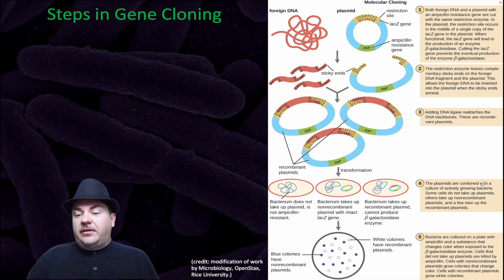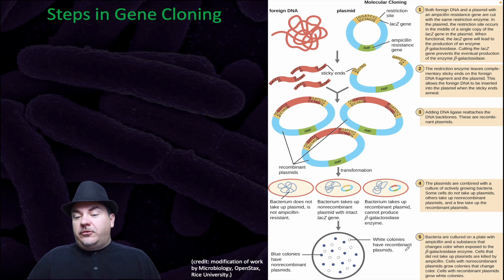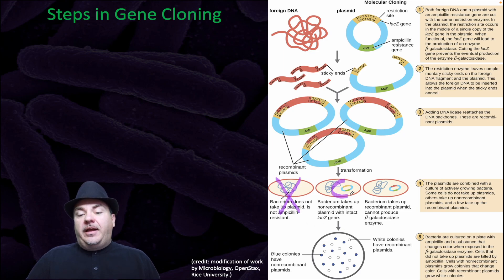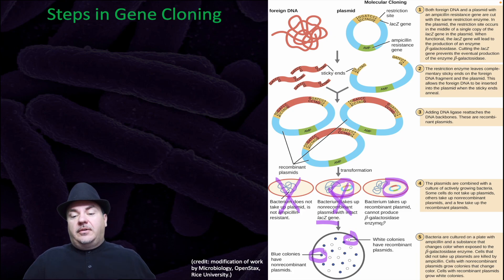The plasmids are combined with a culture of actively growing bacteria. Some cells do not take up plasmids, others take up non-recombinant plasmids, and a few take up the recombinant plasmids. Bacteria are then cultured on a plate with ampicillin and a substance that changes color when exposed to beta-galactosidase. Since the plate contains ampicillin, bacteria without the plasmid won't grow. Bacteria with a non-recombinant plasmid will grow, and since the lacZ gene is intact, they will form blue colonies — but those are not the ones you want. If a bacterium has a plasmid where the foreign gene was inserted, it can grow due to ampicillin resistance, but will not make blue colonies because the lacZ gene was disrupted. Those white colonies are the ones you're looking for.